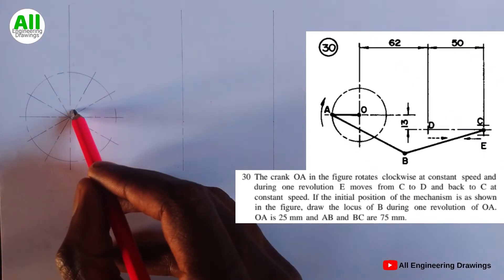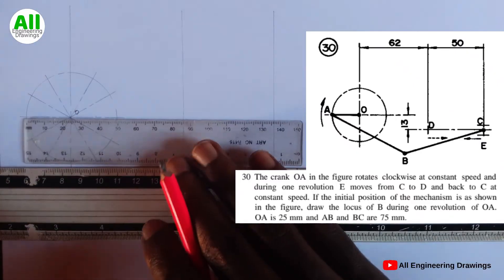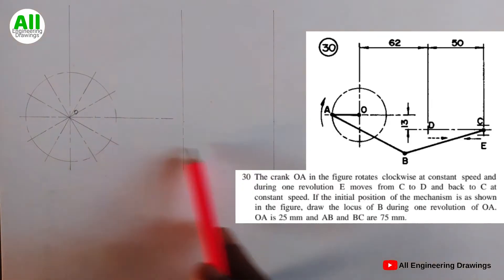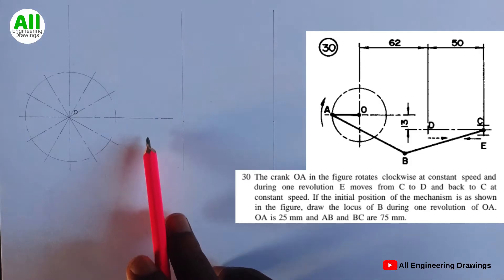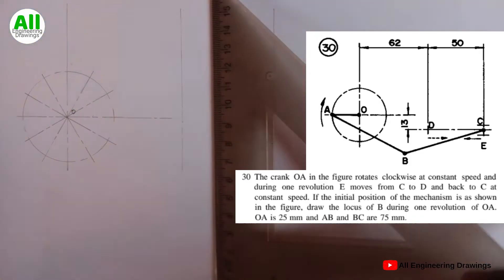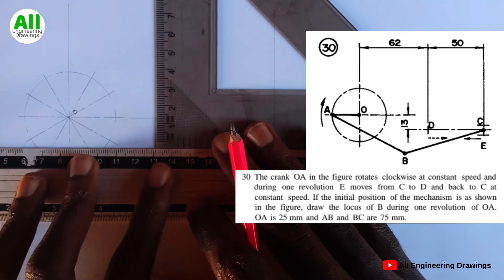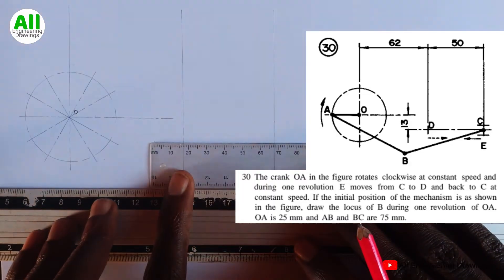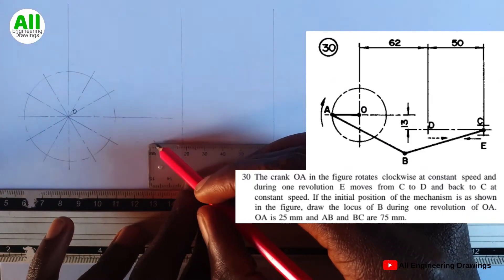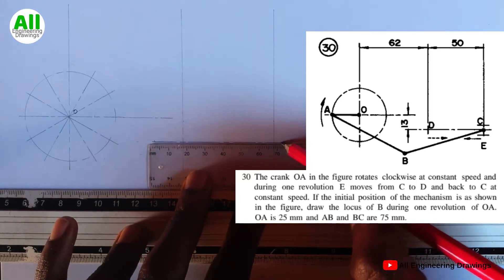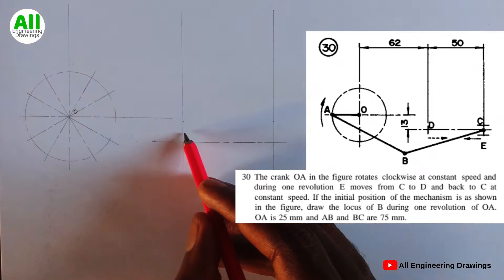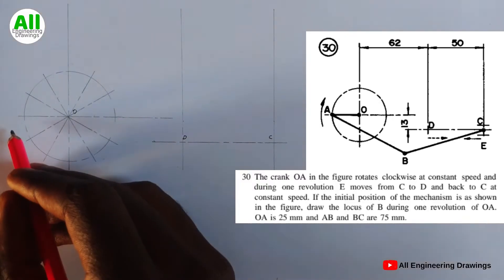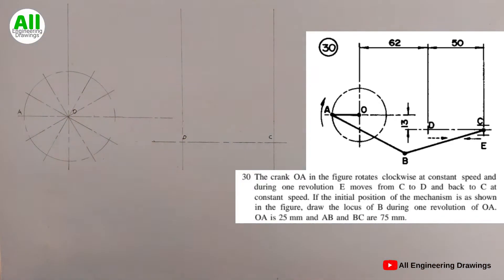This point here is O. There is a line here — according to the question, the line is 13 mm from this line, so I will draw it. This point here is D. This point here is C. I will label this point here A and make AO bold.